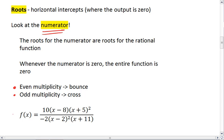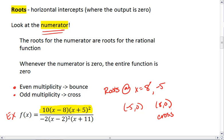Given the example we started with, we can focus on the numerator. We see that we have roots at x equals positive 8 and negative 5, which means we'll have the points negative 5, 0 and 8, 0. At 8, 0 we'll cross, so we have an odd multiplicity. At negative 5, 0 we'll bounce, and we have an even multiplicity.